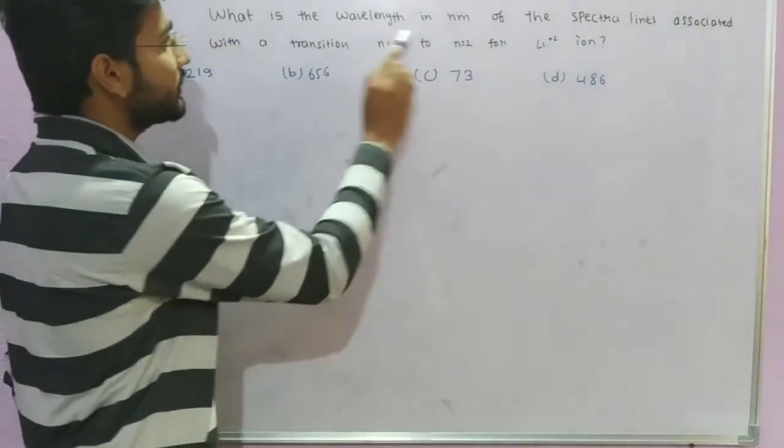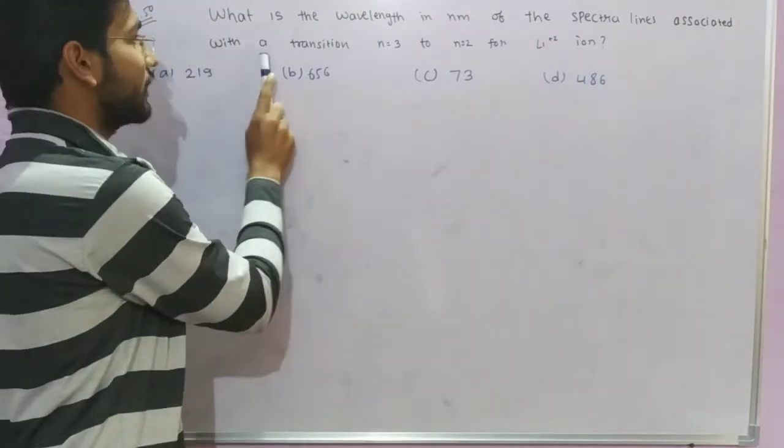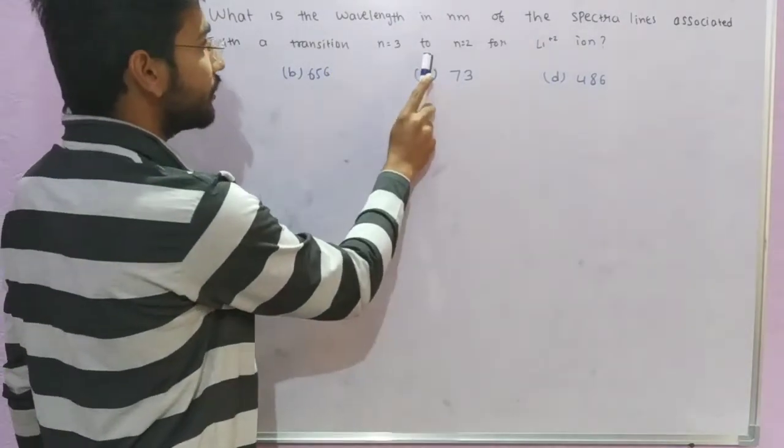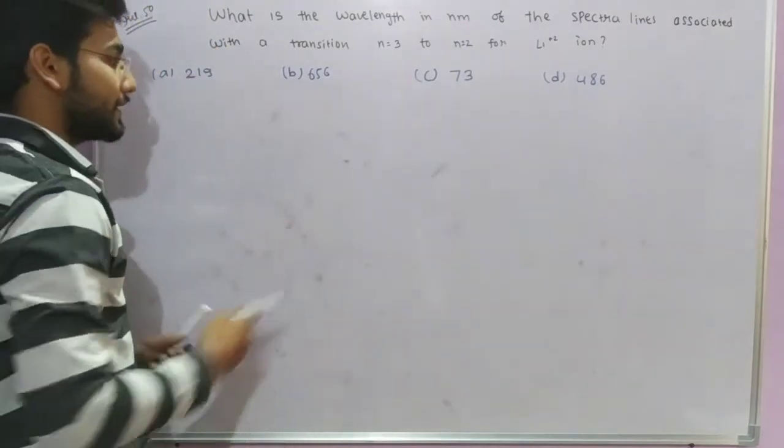Here is the question: What is the wavelength in nanometer of the spectral lines associated with a transition n equals 3 to n equals 4 for Li²⁺ ion? So this is a part of Li²⁺ ion.